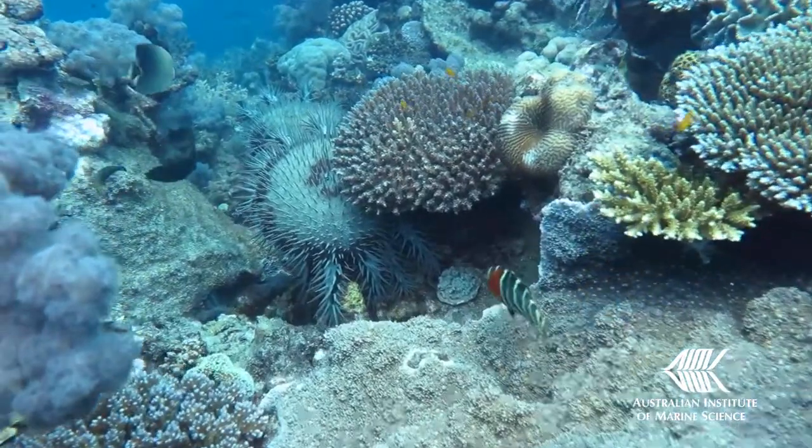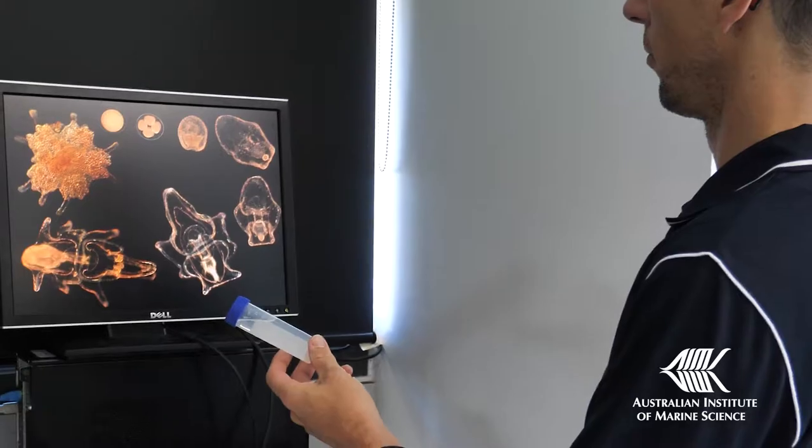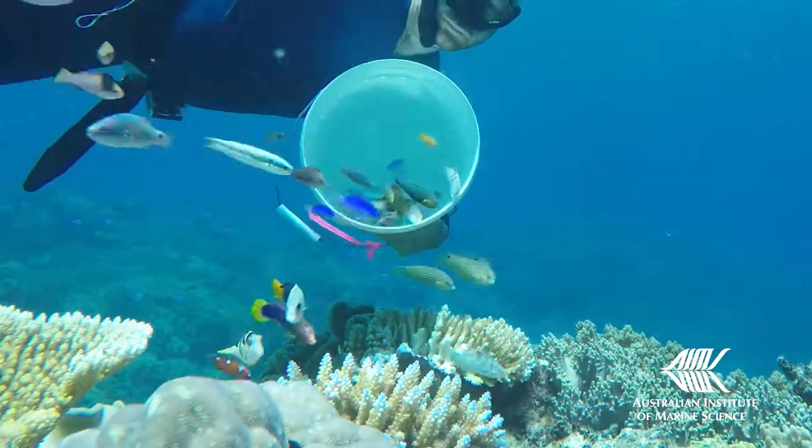But some people also say predation is very important. By producing these juvenile crown-of-thorns, we can look at what's eating them.